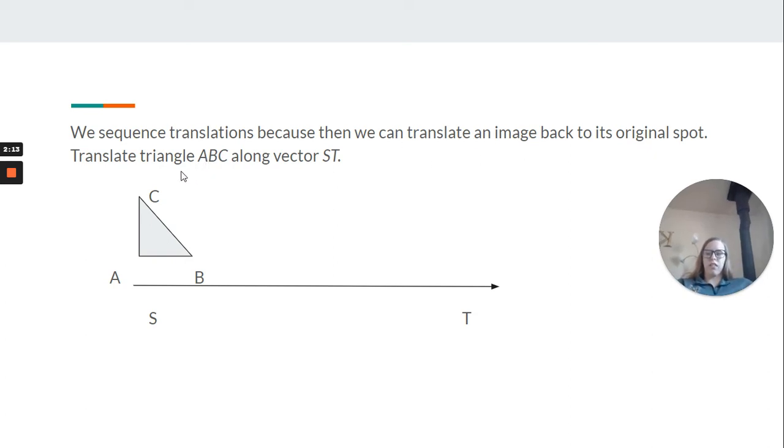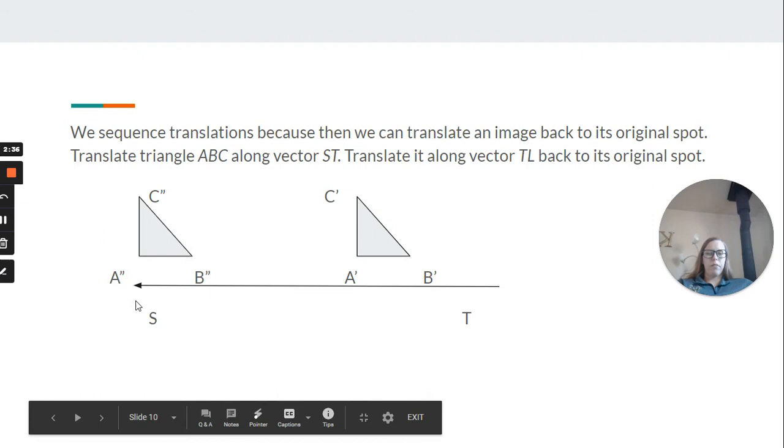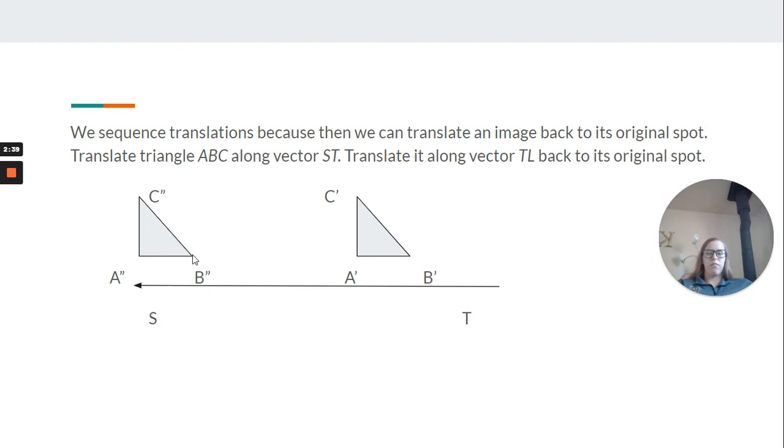The problem says translate triangle ABC along vector ST. So we have ABC. We translated it. Now we want to translate it back to its original spot. That should be an S, not a T. So now we translated it. It basically just went back to the same spot. But it's a translation of now ABC here. So it has those two hash marks. And notice that the vector actually flip-flopped because we're going backwards.